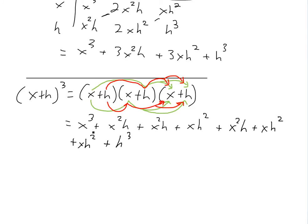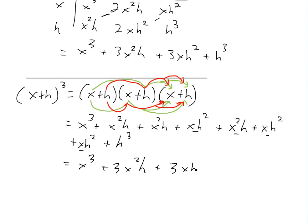Now we add up the like terms: x cubed; then we look at x squared h — there's one, two, and three of these, so we get plus 3x squared h; then x h squared — there's one, two, and three of those, so plus 3x h squared; and finally plus h cubed.